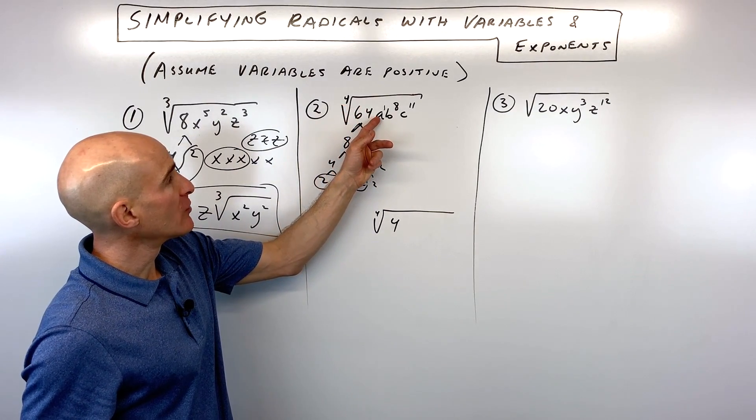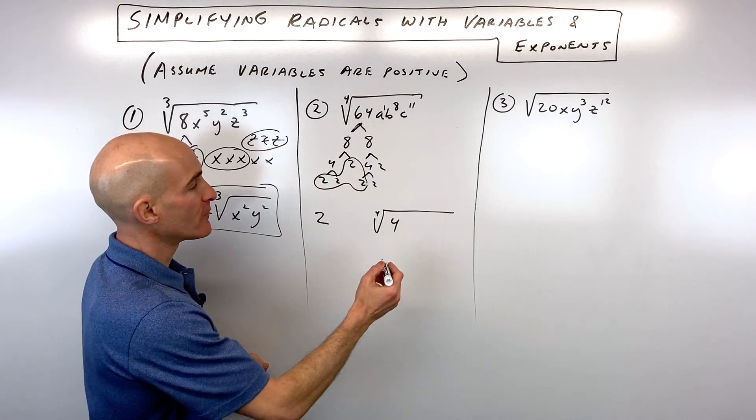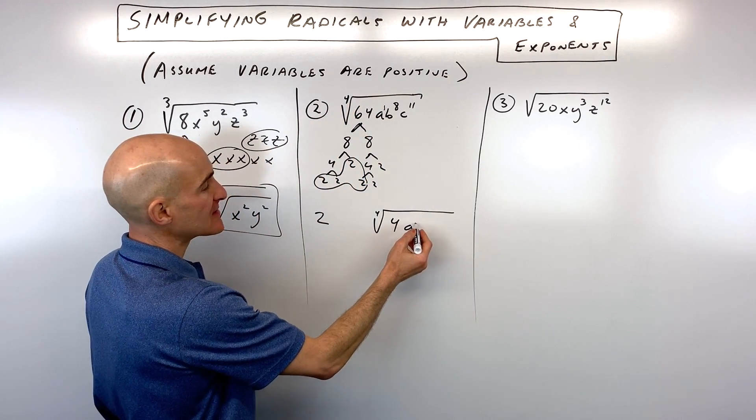Now we're looking for groups of 4 with the variables. So we've got a to the 1st. That's only 1a. We're looking for groups of 4. We don't have enough, so that stays underneath.